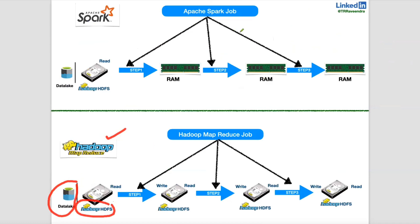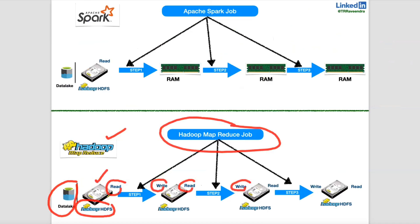Why did Spark come into the picture? Hadoop MapReduce always processes on disk. It reads data from HDFS, and every transformation or iterative operation is a read from disk followed by a write back to disk. Every iterative operation goes to the distributed file system, but on disk. Disk is slower than RAM and CPU.